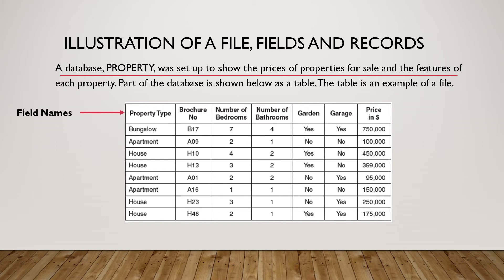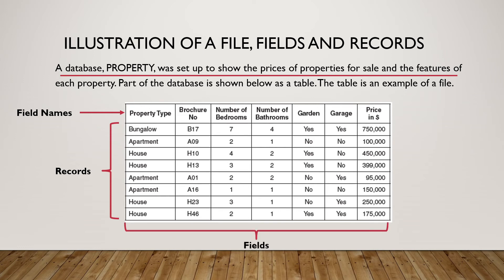The first row, however, is the field names. So each column has a particular name and this is the field name of that particular column. All the other rows are records. We have a list of different types of property — bungalow, apartment, house and so on. All of these are records and the columns will be the fields. Each column will be one field.